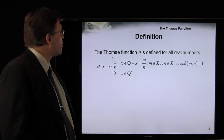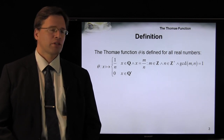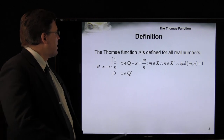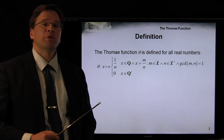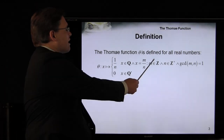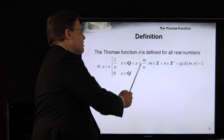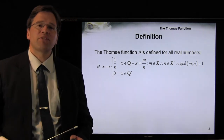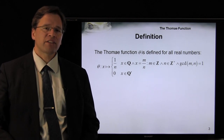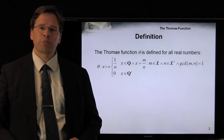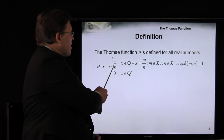The Thomae function is a function that maps the real numbers onto the reals. Specifically, if x is a rational number and it can be written in the form m over n, which is in lowest terms — that is, m is an integer, n is a positive integer, and the GCD of those two values is 1, meaning they are co-prime — then we will map m over n onto the value 1 over n.